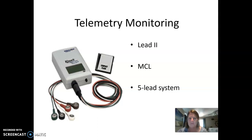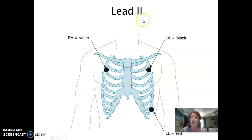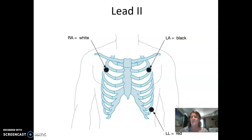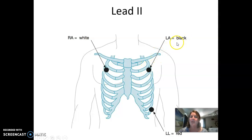Looking at lead two, which is probably the most common monitoring lead, with a three-lead system the white electrode goes towards the right arm — it'll say RA on it. It doesn't have to be on the right arm itself; it's on the chest but towards the right arm. If you have electrodes on the arms, any time the patient moves it will pick up artifact and a poor signal. The black electrode says LA for left arm and goes on the chest towards the left arm. The red electrode says LL and is placed lower on the chest towards the left leg.